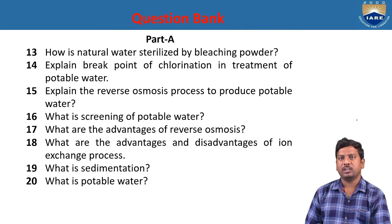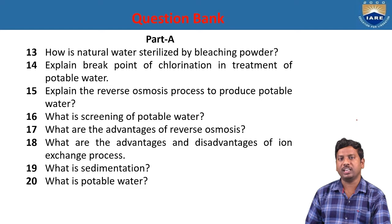How is natural water sterilized by using bleaching powder? The formula of bleaching powder is calcium oxychloride. Calcium oxychloride reacts with water to give hypochlorous acid. That hypochlorous acid acts as a disinfectant to kill germs and bacteria present in the water — this is the sterilization process.